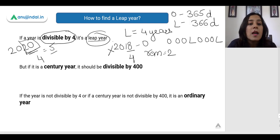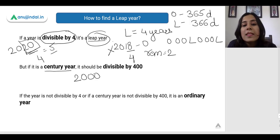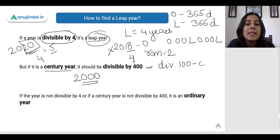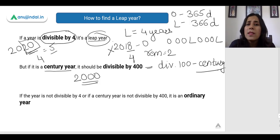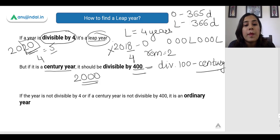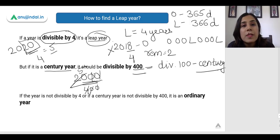However, there is an exception to this rule. There is a concept called a century year. A century year is any year which is divisible by 100, because the last 2 digits are 00. Century itself means 100. So once you see that the last 2 digits of a year are 00, you don't divide it by 4, but instead divide it by 400 and see if you get any remainder. For example, the year 2000 divided by 400 gives 5 — it is completely divisible by 400, so the year 2000 was also a leap year.